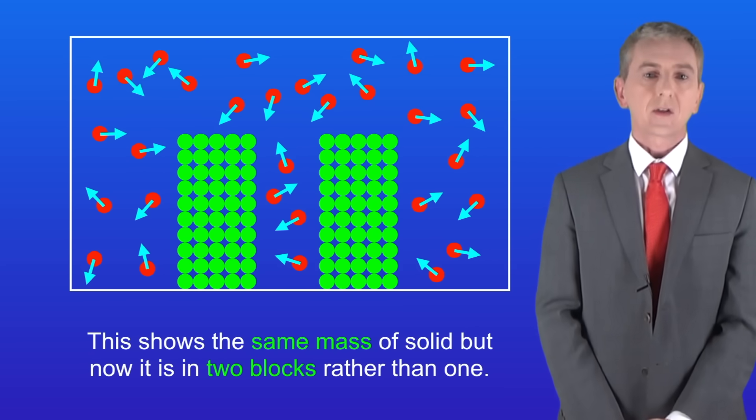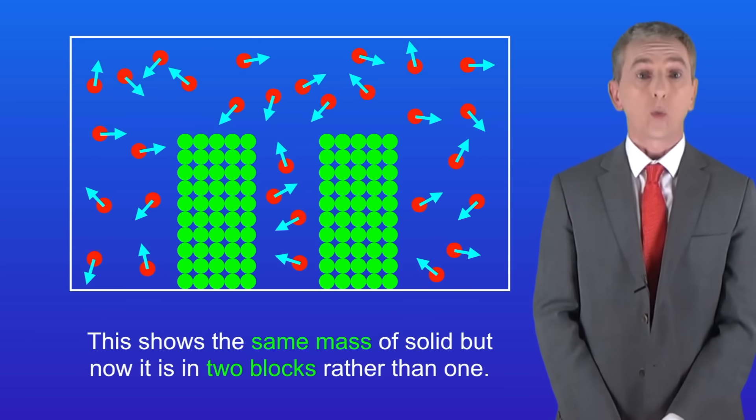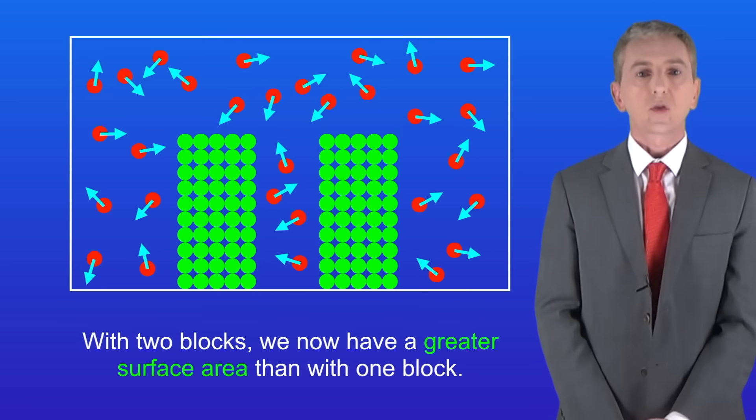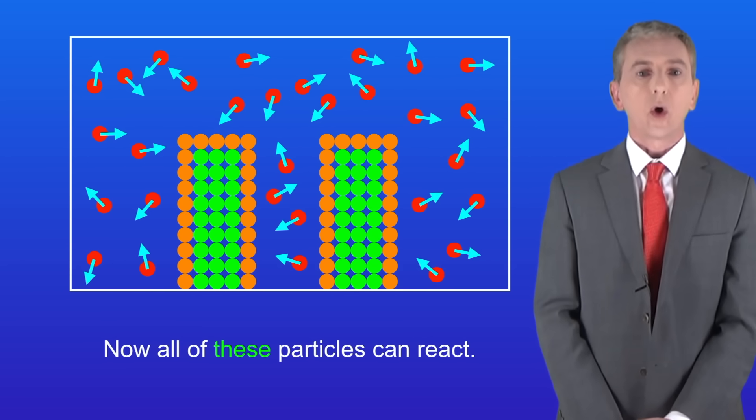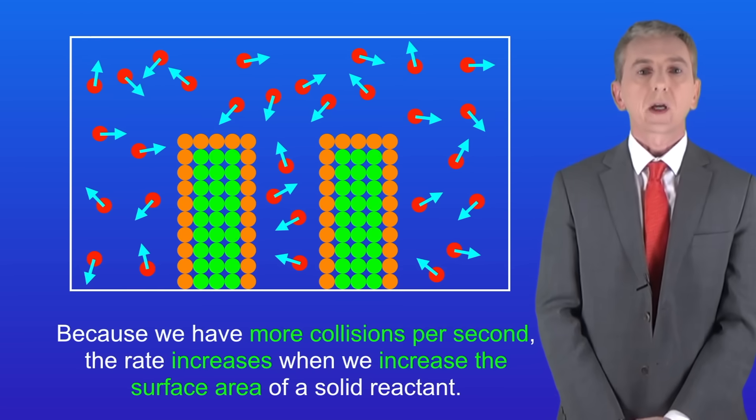In this diagram I've taken the same mass of solid but now it's in two blocks rather than one. With two blocks we now have a greater surface area than with one block. So now all of these particles can react. Because we've got more collisions per second, the rate increases when we increase the surface area of a solid reactant.